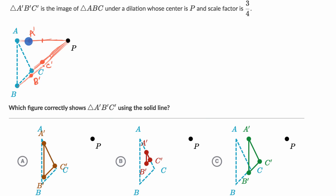And so A prime, B prime, C prime should look something like this, which we can see is exactly what we see for choice C. So choice C looks correct. I'm going to just circle that or select it just like that.